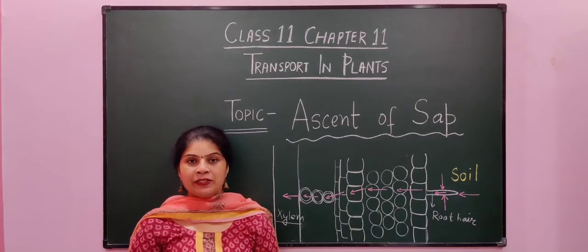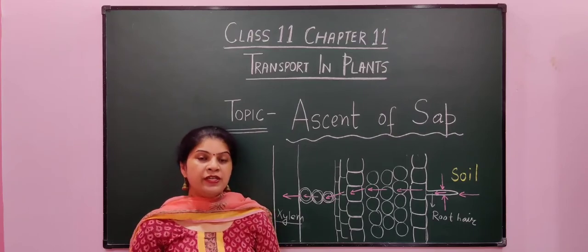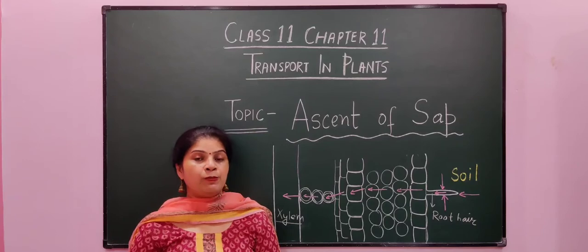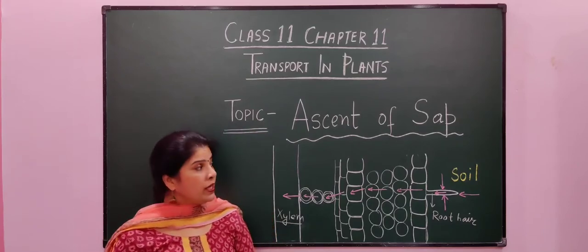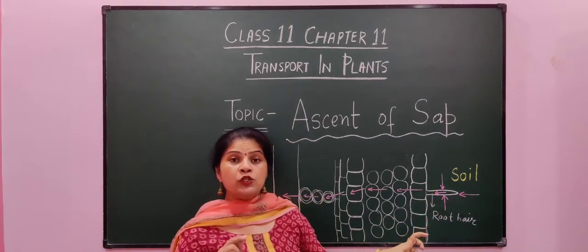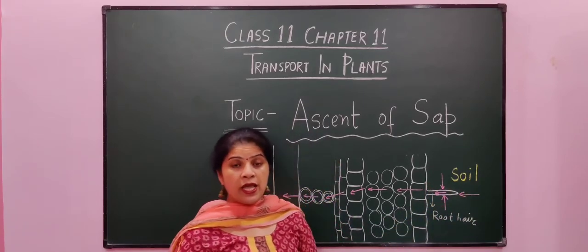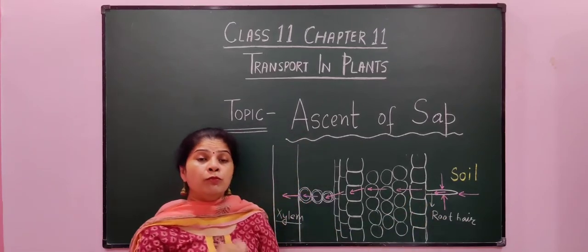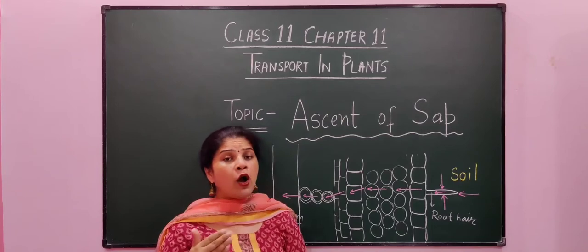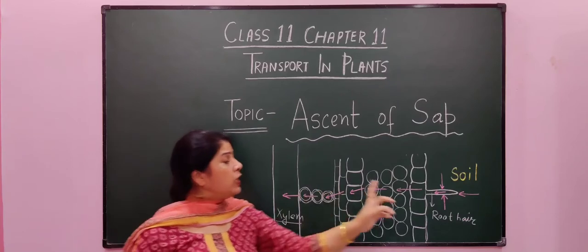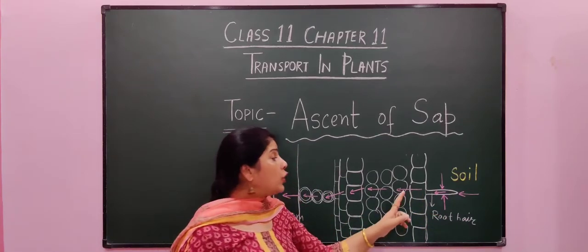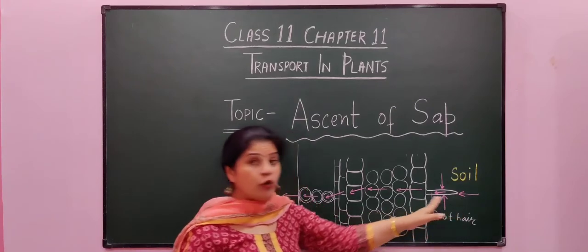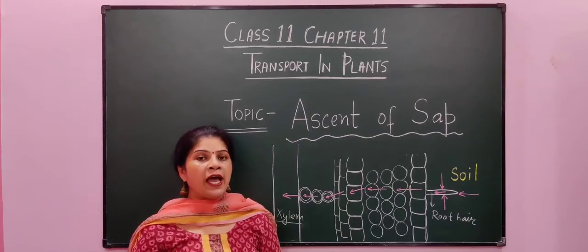Hello students. We are doing the 11th chapter, that is transport in plants. In my previous lecture I discussed about absorption of water. Absorption of water is a short distance movement of water and it takes place by the process of imbibition and osmosis. During absorption of water, first the water present in the soil solution is absorbed over the surface of the root hairs, and then it is absorbed by the root hairs by the process of osmosis.